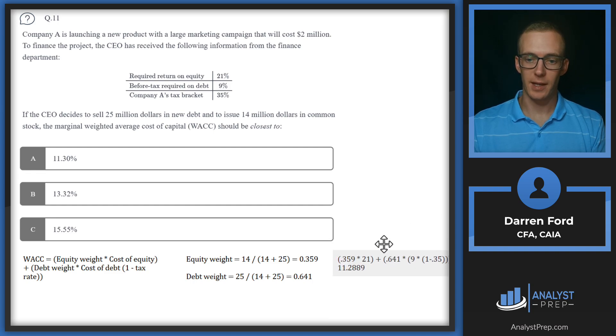Bring it all together, we've got our 0.359 equity weight times the 21% ROE, and then take the debt weight times nine times one minus the tax rate, gives us a weighted average cost of capital of 11.2889. We can round that up to A, 11.3%.